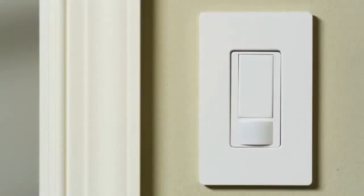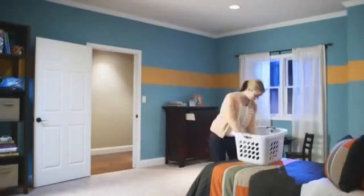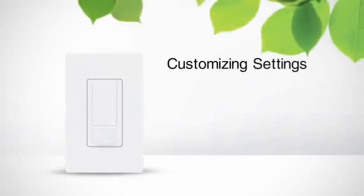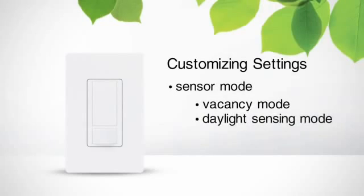Your sensor's default setting is occupancy mode, which means the sensor will turn the lights on when you enter a room and off when you leave. You can also change the sensor to vacancy mode or daylight sensing mode.